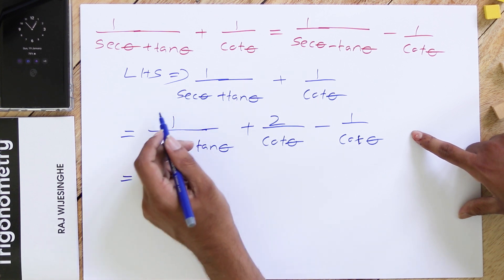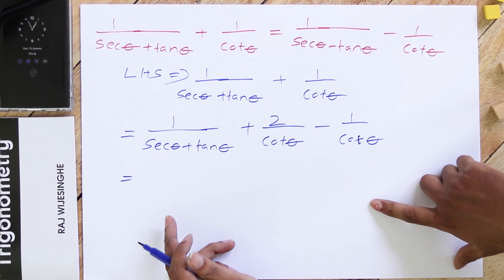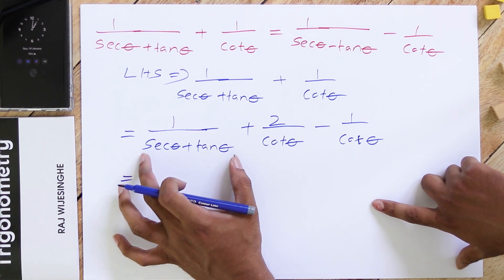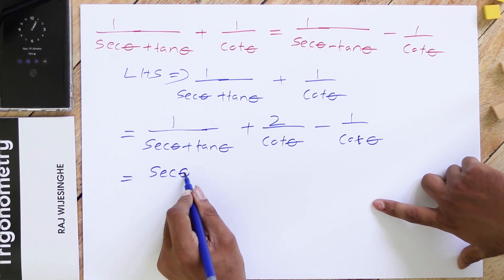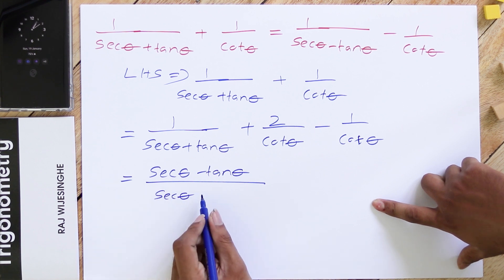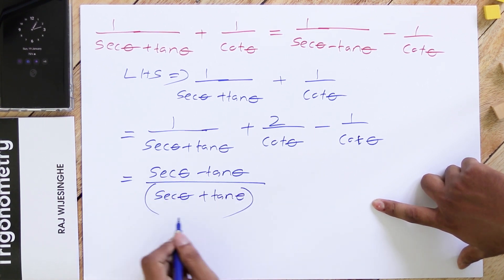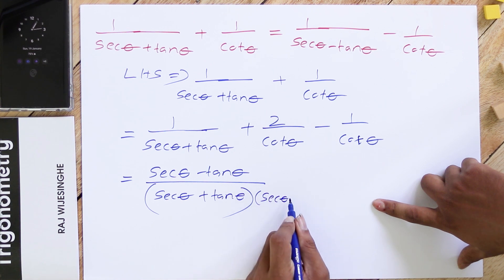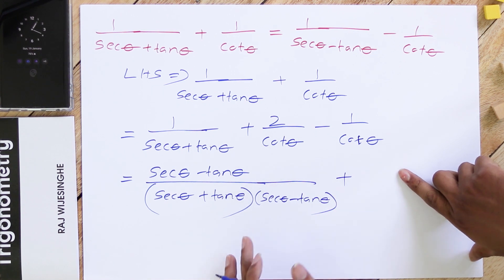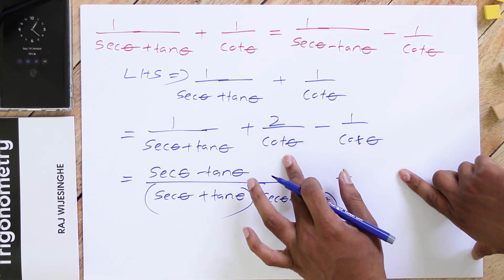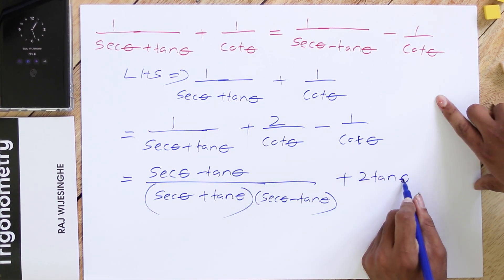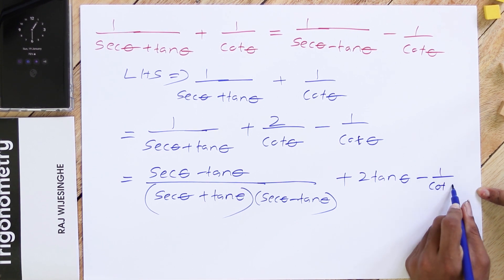After that, we multiply 1/(sec θ + tan θ) by the conjugate of the denominator — the conjugate of (sec θ + tan θ) is (sec θ − tan θ). So up and down, we multiply by (sec θ − tan θ), giving: (sec θ − tan θ)/[(sec θ + tan θ)(sec θ − tan θ)] + 2/cos θ − 1/cos θ. Also, 2/cos θ can be written as 2 sec θ.